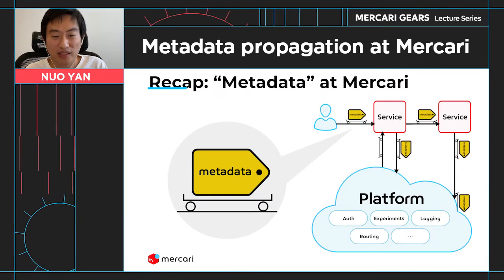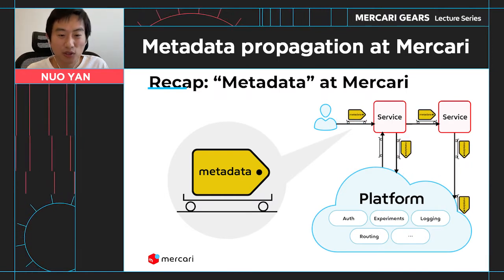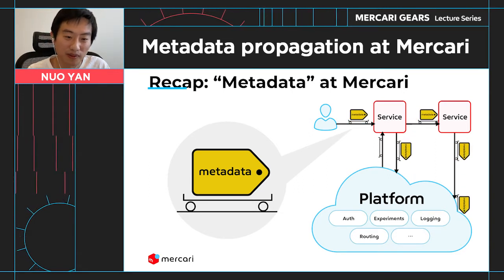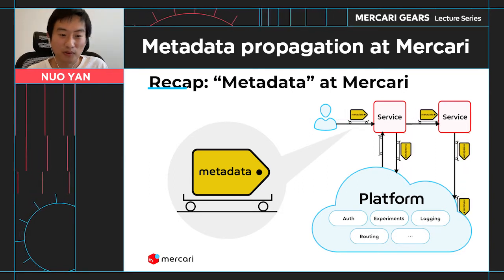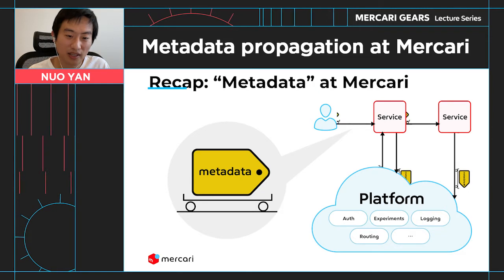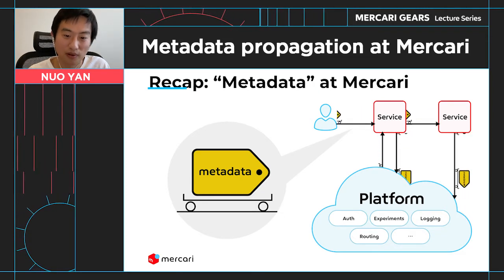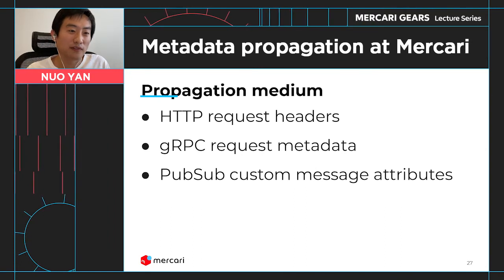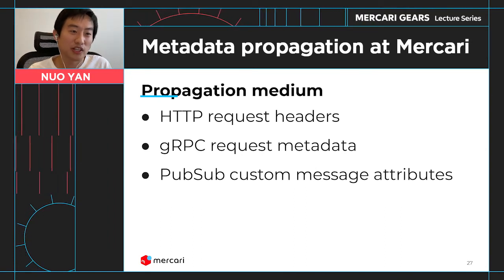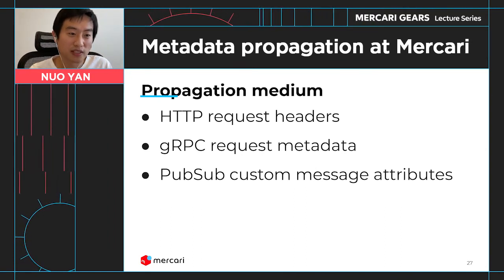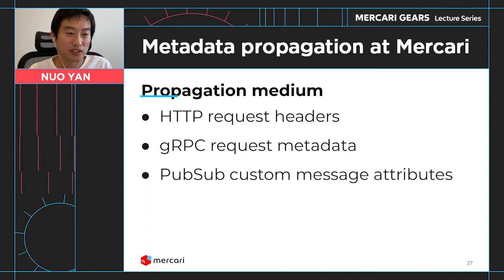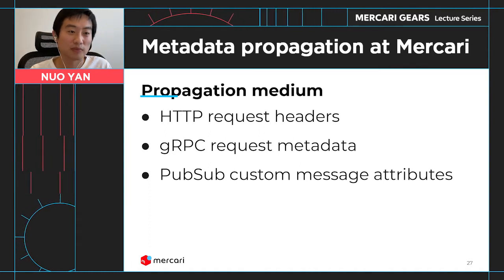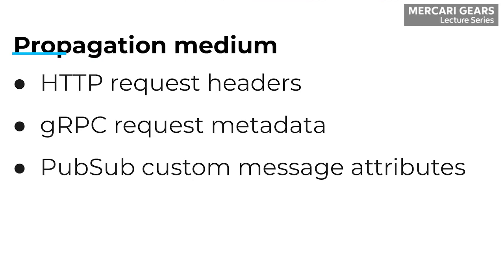Just to refresh the memory: metadata at Mercari means some out-of-band data used by the platform to provide functionality to the services on top of them. It's used by examples like authentication, experimentation platform, logging, and such. In our infrastructure, we have several different kinds of services: HTTP services, gRPC services, and services that publish messages to PubSub and receive messages from PubSub. For HTTP and gRPC, metadata are propagated using request headers.